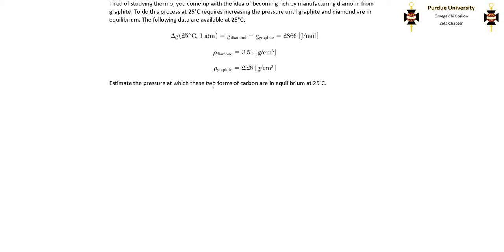From the data given, we know that it takes 2866 joules per mole to change graphite into diamond at 25 degrees Celsius and one atmosphere. In order for these two species to be in equilibrium, there will be no change in Gibbs free energy between the two species.